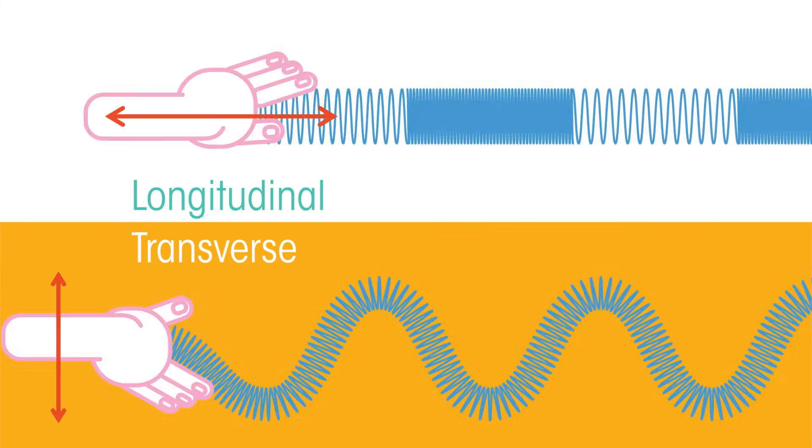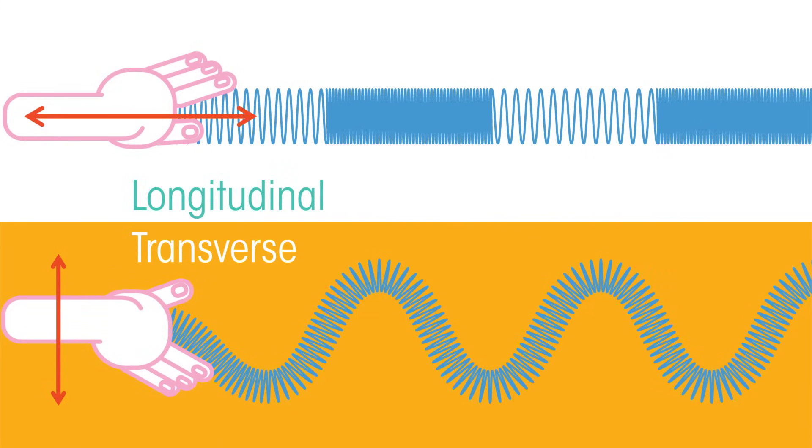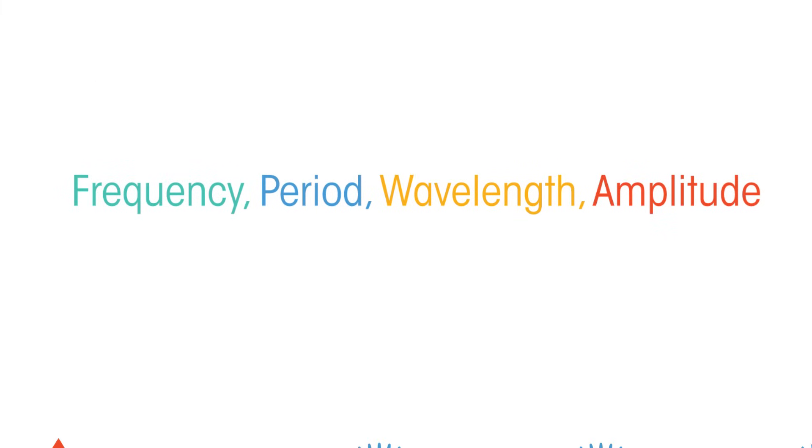There are two types of waves, which we look at in more detail in another video but the basic features are the same. These four words describe different properties of waves. Let's discover what each one means.